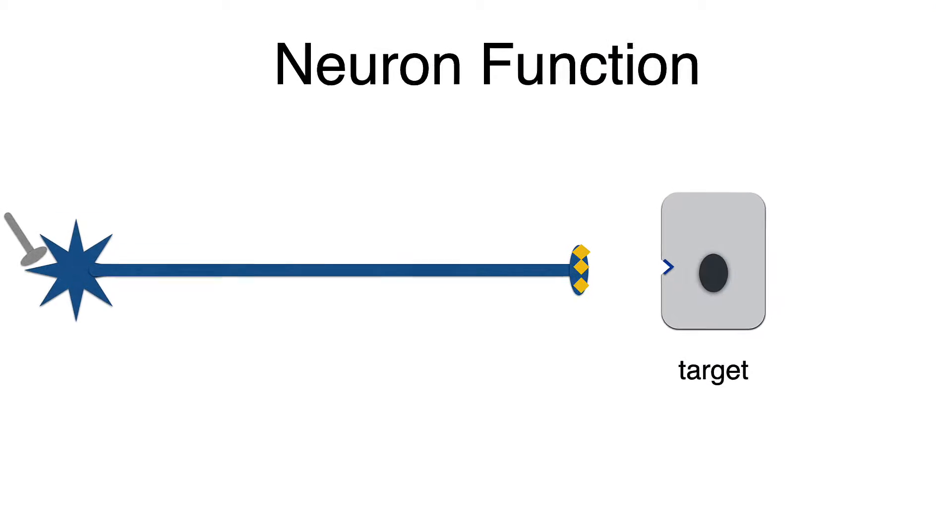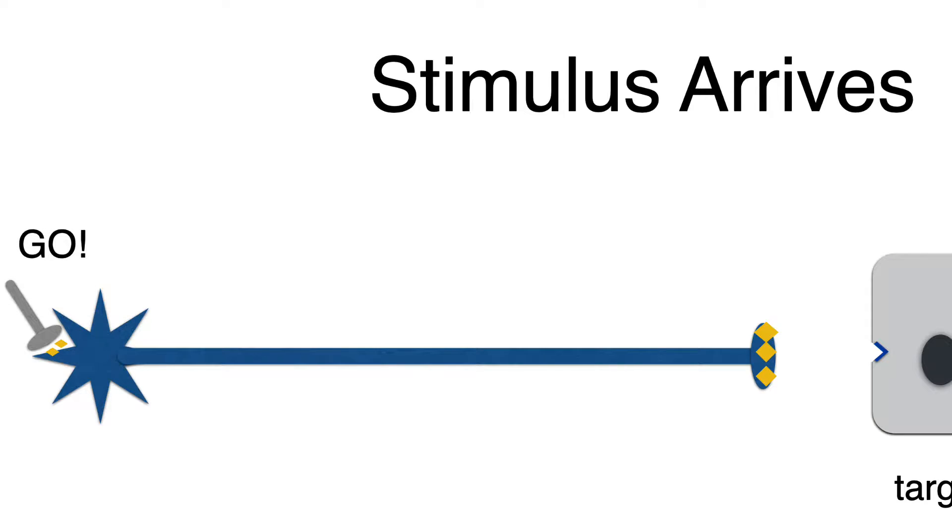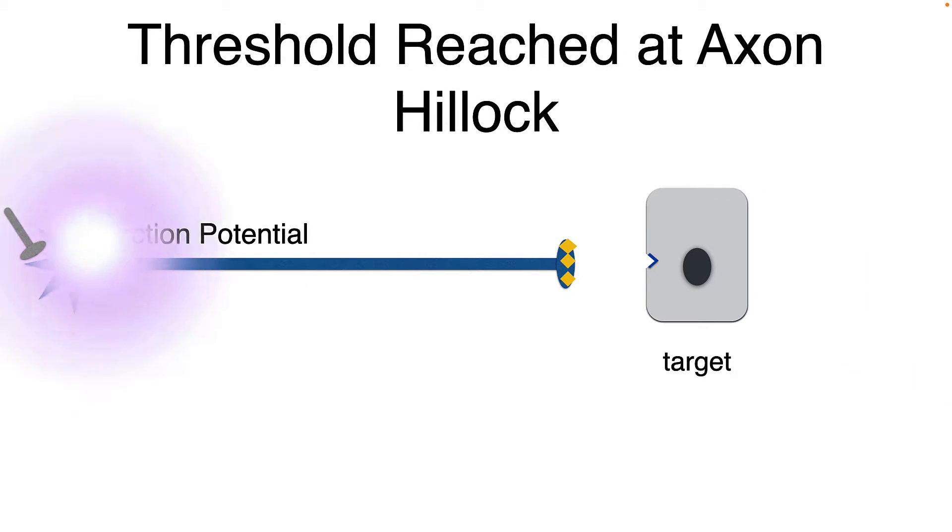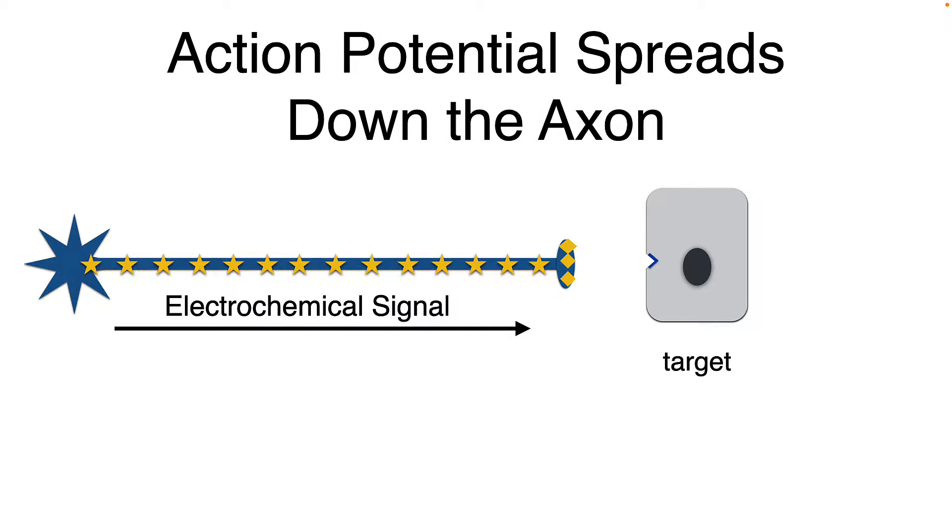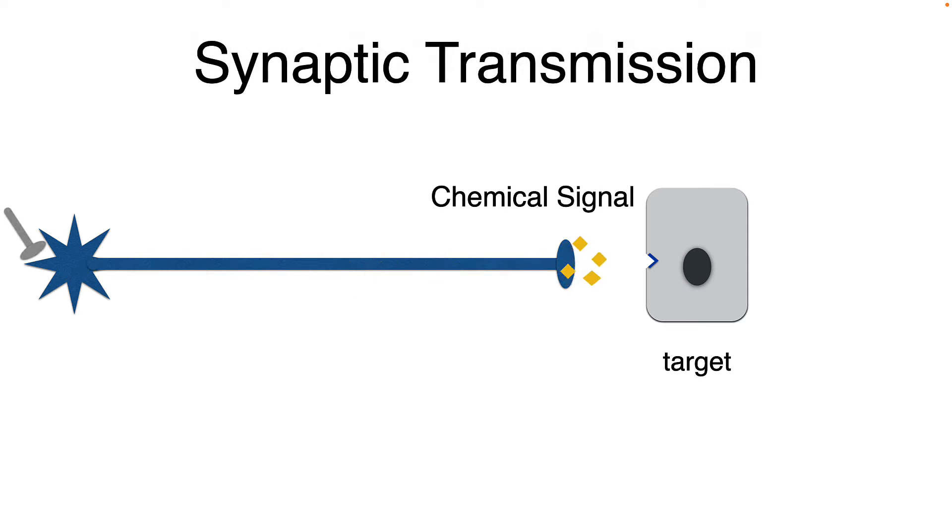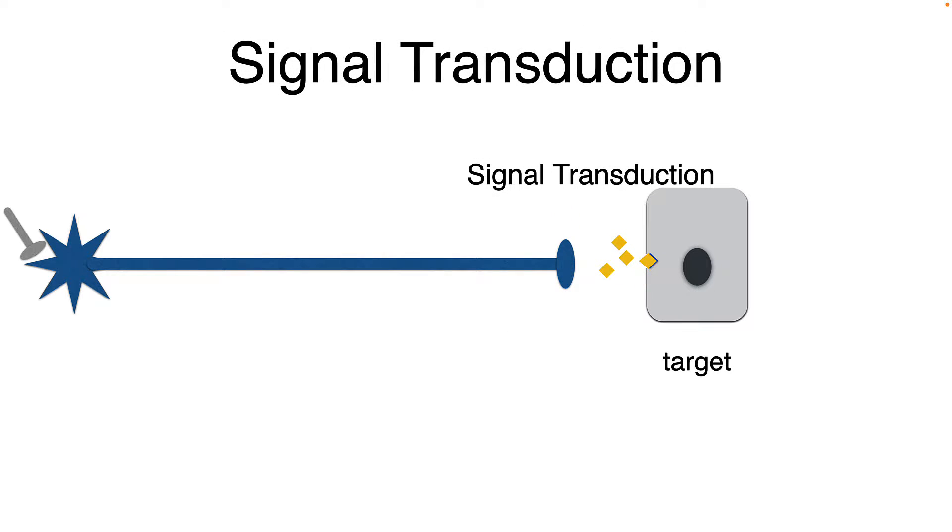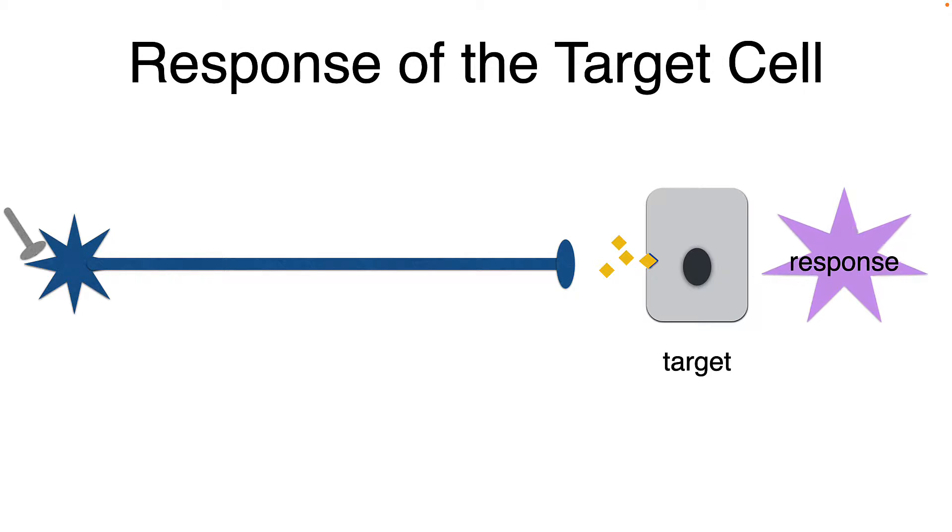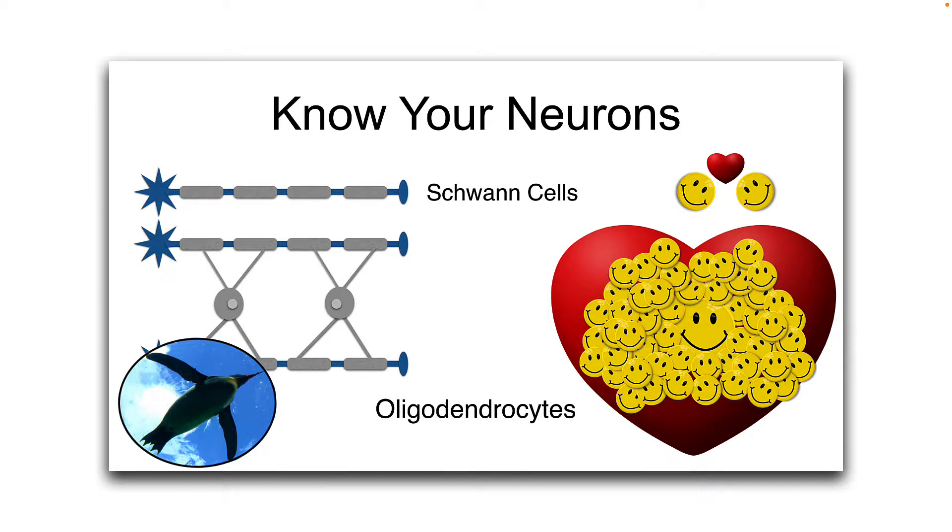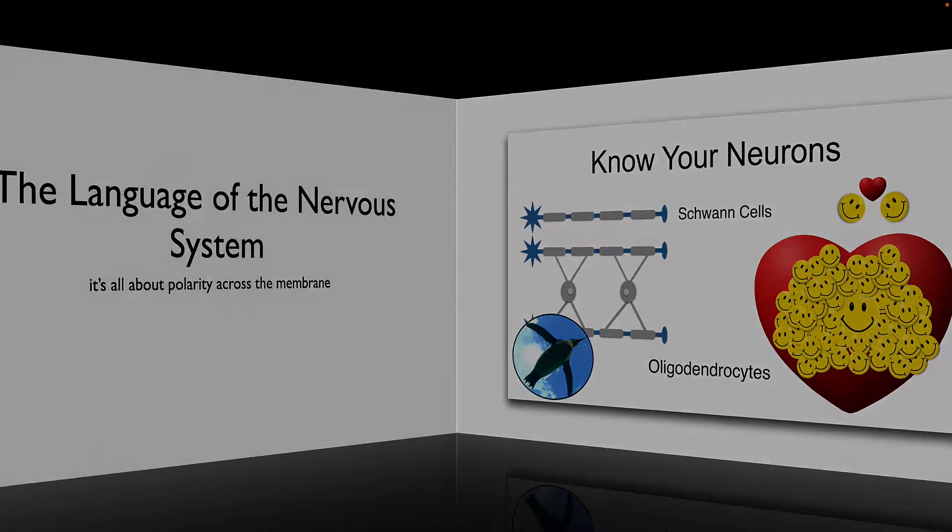So here we are, basic neuron function. We have the arrival of a stimulus. It says go. We reach threshold at the axon hillock, and we have an action potential. And that electrochemical signal will spread down the axon, arriving at the axon terminal. We get the release of neurocrines across the synapse, binding to a receptor, signal transduction, resulting in a cellular response. If you want to see more about that, check out Know Your Neurons.